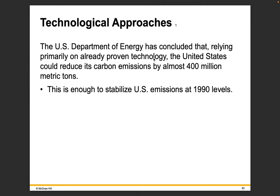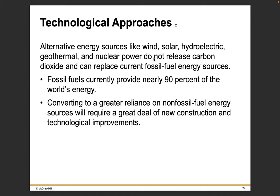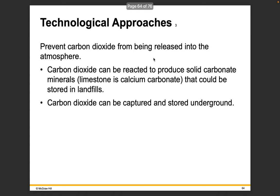The U.S. Department of Energy has concluded that relying primarily on already proven technology, the U.S. could reduce its carbon emissions by almost 400 million metric tons — enough to stabilize U.S. emissions at 1990 levels. Technological approaches include alternative energy sources like wind, solar, hydroelectric, geothermal, and nuclear power. Fossil fuels currently provide about 90% of the world's energy, so converting to non-fossil fuel sources will require a great deal of new construction and technological improvements. CO2 can also be prevented from entering the atmosphere by reacting it to produce solid carbonate minerals like limestone, which could be stored in landfills, or by capturing and storing CO2 underground. Technological changes come with a cost that will be paid by consumers, so government policies stimulating the development of these technologies will be needed.